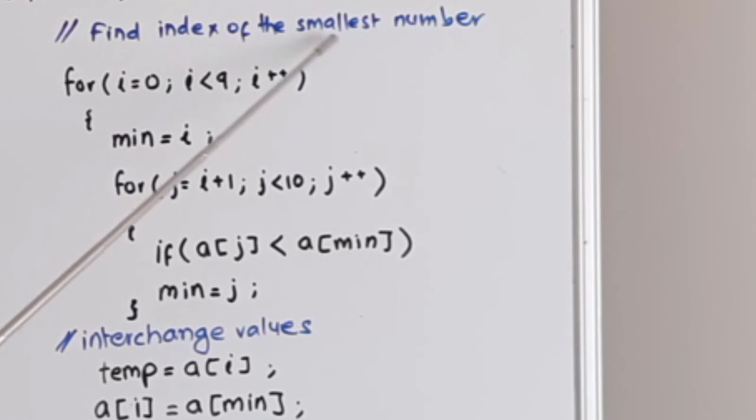First we will find the index of the smallest number. For i is equal to 0, i is less than 9, i double plus. We have an array of 10 numbers but in this for loop we are reducing the upper limit to 9.